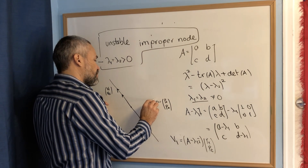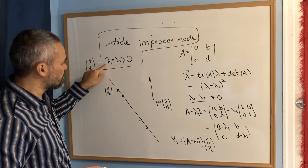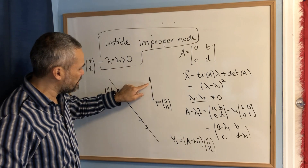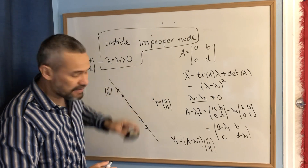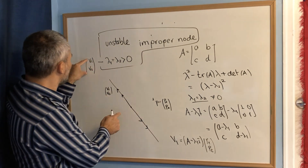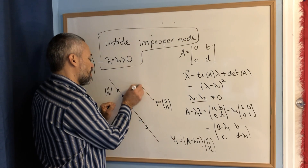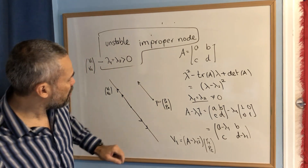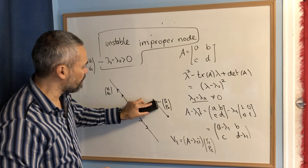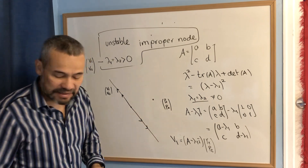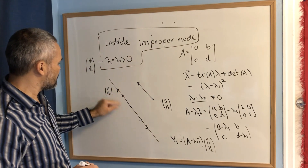You can prove mathematically that this resulting vector v is parallel to the eigenvector (v₁, v₂). So this vector is going to be either in one direction or the opposite direction along that eigenvector line — it will always be parallel.